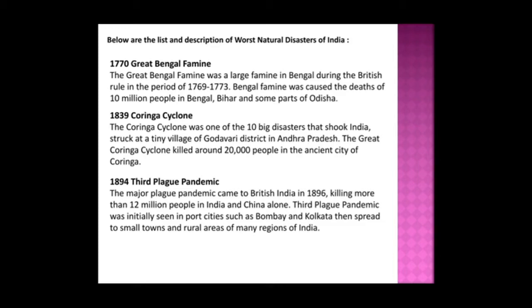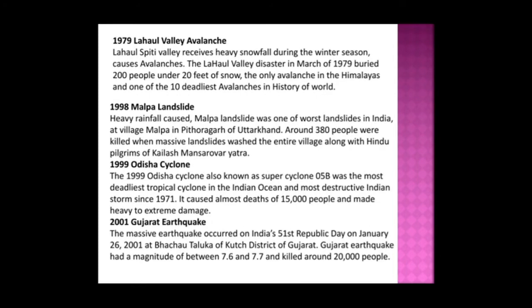The Lahul Valley Avalanche of 1979 occurred in Lahul Spiti Valley, which receives heavy snowfall in winter. In March 1979, the disaster buried 200 people under 20 feet of snow, making it one of the 10 deadliest avalanches in world history. The Malpa Landslide of 1998 was one of the worst landslides in India; heavy rainfall caused a massive landslide at the village of Malpa in Pithoragarh, Uttarakhand, killing around 380 people including Hindu pilgrims on the Kailash Mansarovar Yatra.